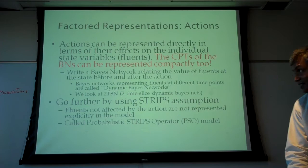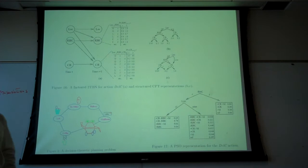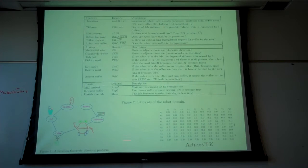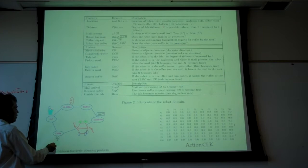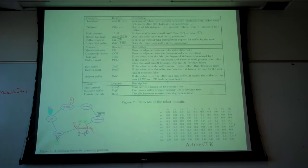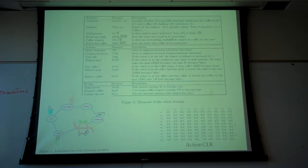This is an example from Boutilier, Dean, and Hanks' paper on decision-theoretic planning. It's a robot scenario where the robot goes from the mail room, picks up coffee, and delivers it to your office. The state variables are: location, tidiness, mail present, robot has mail, coffee request, and robot has coffee. The actions include move clockwise, move counterclockwise, tidy the lab, pick up mail, get coffee, deliver mail, and deliver coffee.